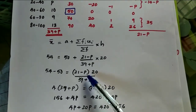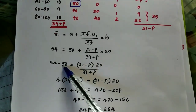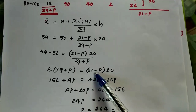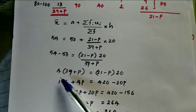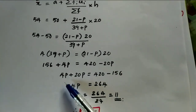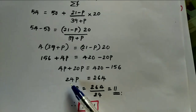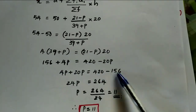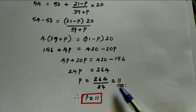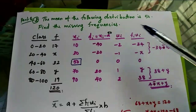So 4 equals (21 minus p) into 20, divided by (39 plus p). Cross multiplying: 4 into (39 plus p) equals (21 minus p) into 20. Opening the brackets: 156 plus 4p equals 420 minus 20p. Transposing: 4p plus 20p equals 420 minus 156, giving 24p equals 264. Therefore p equals 264 divided by 24, which equals 11. So the value of p is 11.